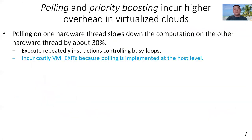These techniques incur higher overhead in virtualized clouds. This is because virtualization incurs extra operations, as shown in blue. In virtualized systems, based on our experiments, polling on one hardware thread may slow down the computation on other hardware threads by about 30%.